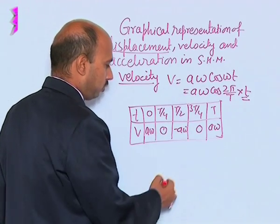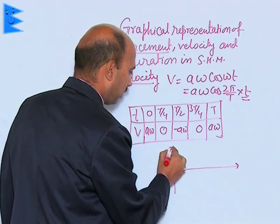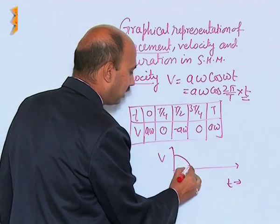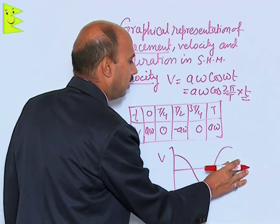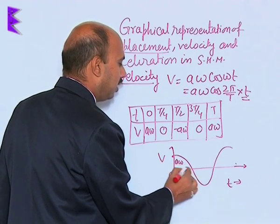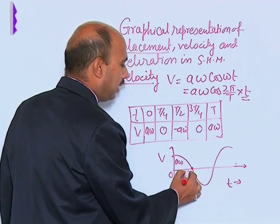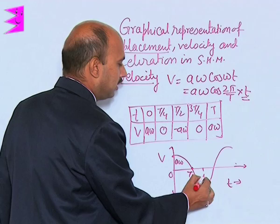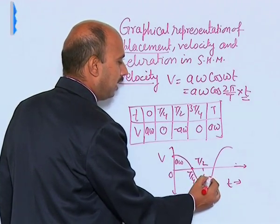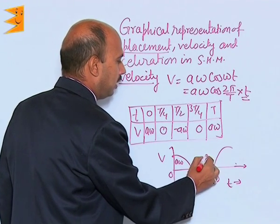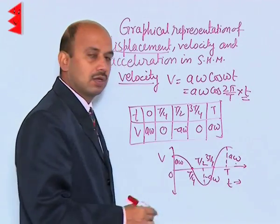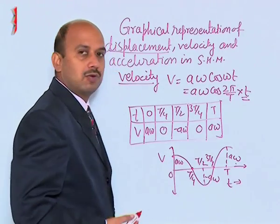So, we can draw its graph also. Here velocity we are taking and here is time. The graph is like this. In this case, see here this is 0, maximum amplitude is here a omega. This is here 90 degree, that means t by 4, this is 0 and this is here t by 2, that is here minus a omega. It is coming here 3 t by 4 and again here it is coming t, that is a omega. So, this is the graphical representation for velocity.